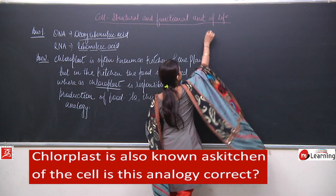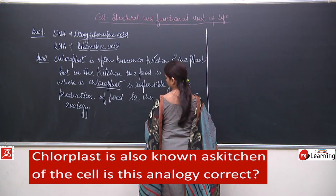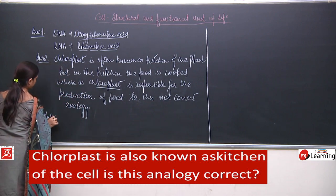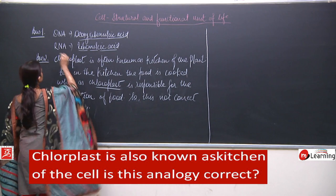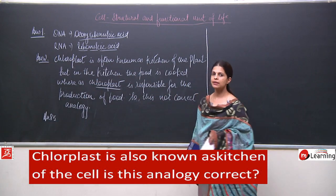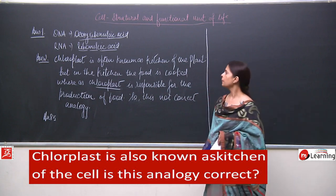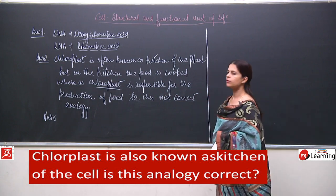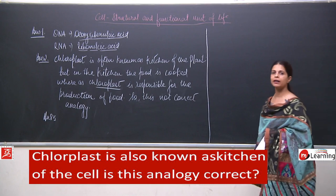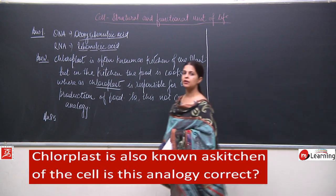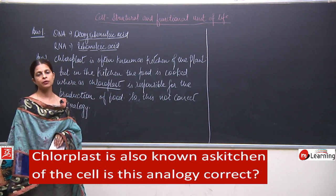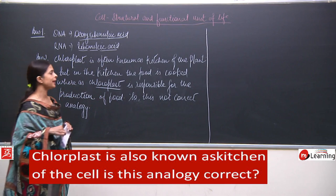Now we will move to the next question. To summarize: question one was the full form of DNA and RNA. The second question was about whether chloroplast is known as the kitchen of the plant is correct. What I think is that it is not correct because in the kitchen we do not produce food — we just cook it — whereas the chloroplast is responsible for the production of food in the plants.